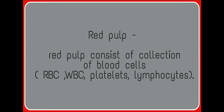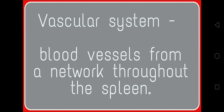Red pulp of the spleen consists of a collection of blood cells like RBCs, WBCs, platelets, and lymphocytes. The vascular system forms a network of blood vessels throughout the spleen.